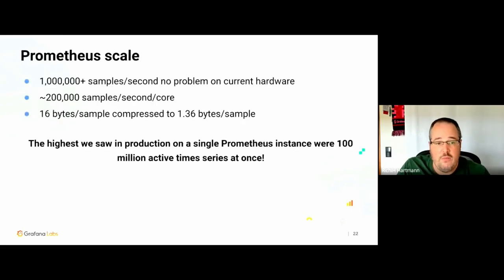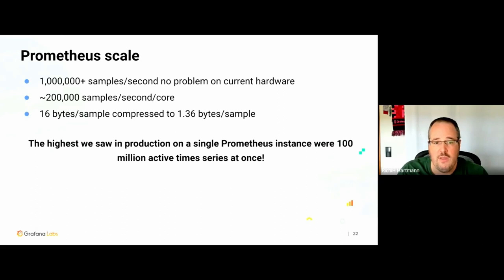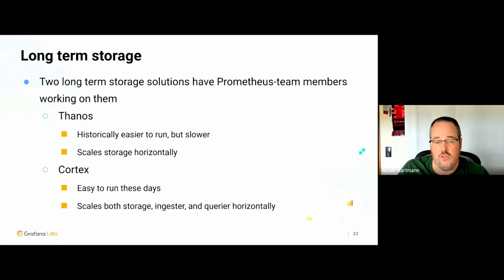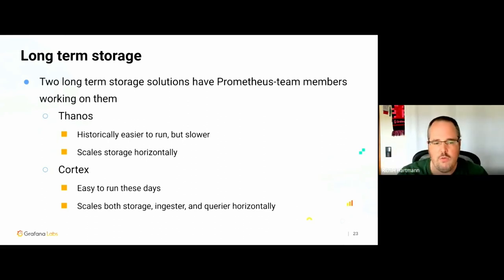The scale of Prometheus: ingesting a million samples per second is not a problem on current hardware — roughly 200k samples per core per second. We compress quite aggressively, which is nice for storage and long-term storage. The largest single Prometheus instance we know of is 100 million active series at the same time, and that worked. For long-term storage there are two solutions that Prometheus team members are working on — Cortex and Thanos being the primary ones.